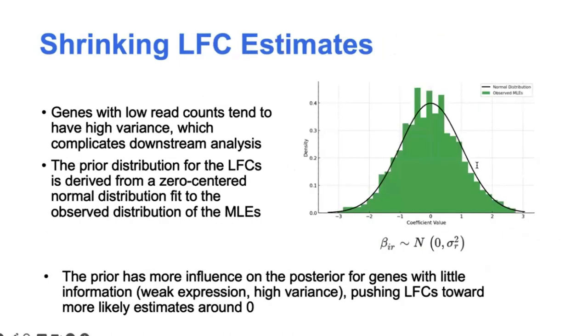Okay, so the second type of shrinkage that only DESeq does is a shrinkage of the log fold change estimates themselves. So what this does is to help address the fact that genes with low read counts tend to be more noisy and have higher variance. So in a similar way, we want to push those genes towards the more likely values, which are assumed to be around zero. So to do this, the algorithm first computes an initial set of log fold changes by maximum likelihood estimation. And those are used to obtain this zero centered normal distribution as the prior for each coefficient. So the prior is constructed in this form here. So the mean is already fixed at zero, and then the variance for that experimental variable is estimated by the distribution of those MLEs.